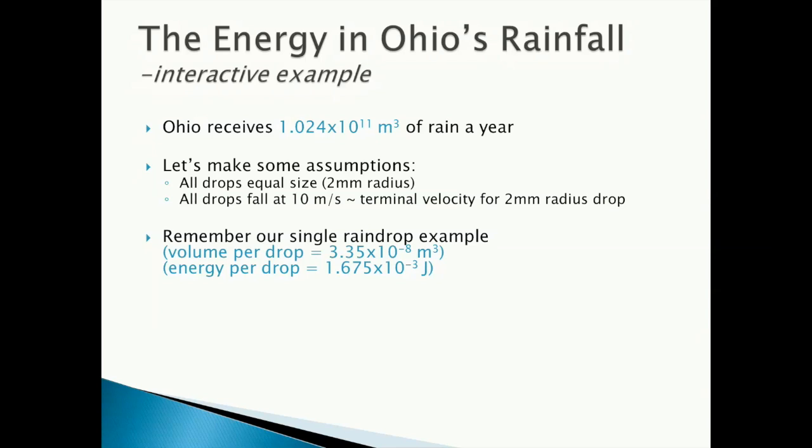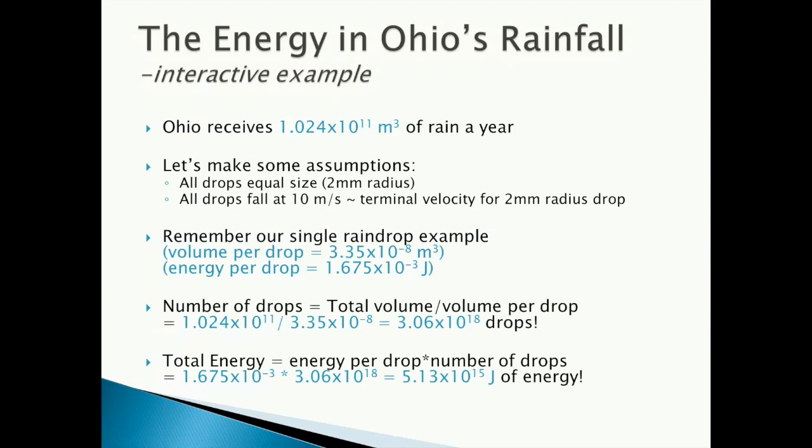Remember our single raindrop example answers, the volume and the energy. To start, we need the total number of drops. If we take the total volume of rain and divide it by the volume of one raindrop, we get a staggering 3.06 times 10 to the 18 drops of rain per year. To get the total energy, we take the energy per drop and multiply it by the number of drops that we just calculated. This works out to 5.13 times 10 to the 15 joules of energy.